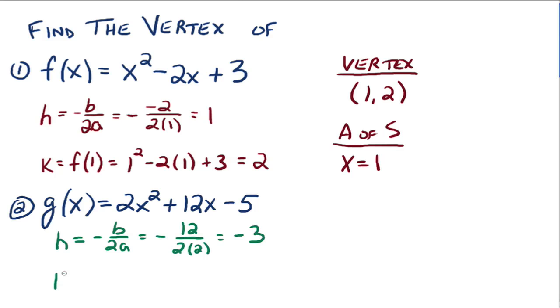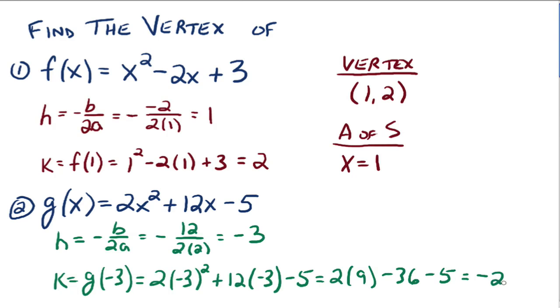All right, so once we know that, we can figure out k, which would be g of negative 3. So we would have 2(-3)² + 12(-3) - 5, which goes to 2(9) - 36 - 5, which finally goes down to negative 23.